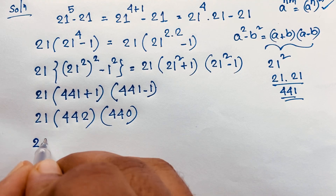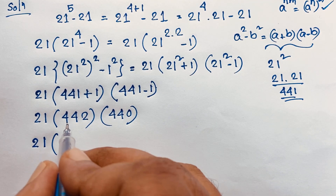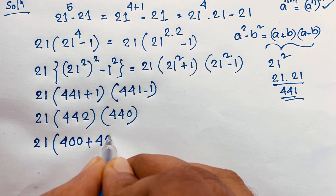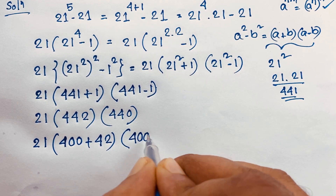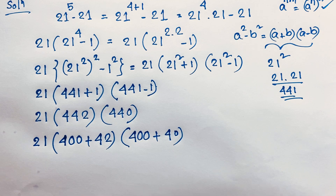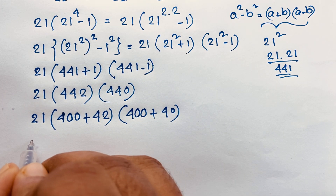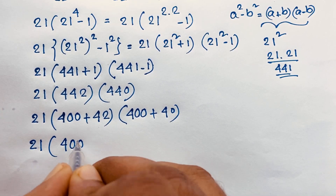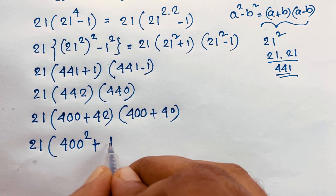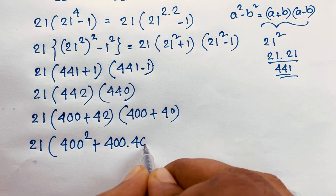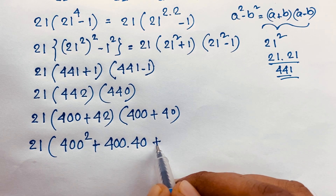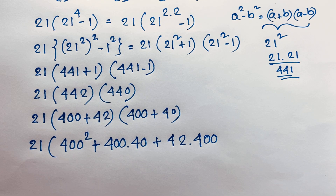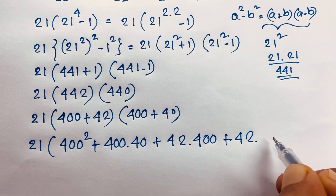Easily, you can see it will be 21 times (400 plus 42) times (400 plus 40). Expanding this: 400 squared, plus 400 times 40, plus 42 times 400, plus 42 times 40. I am solving this math question without a calculator, step by step.